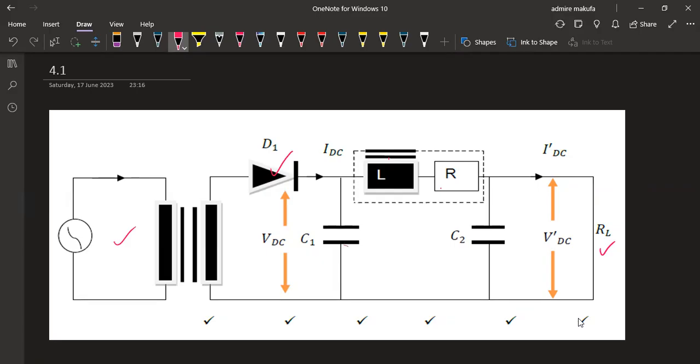Make sure showing the two capacitors, which is C1 and C2, for smoothing purpose. This filter is also called a capacitor input pi filter.